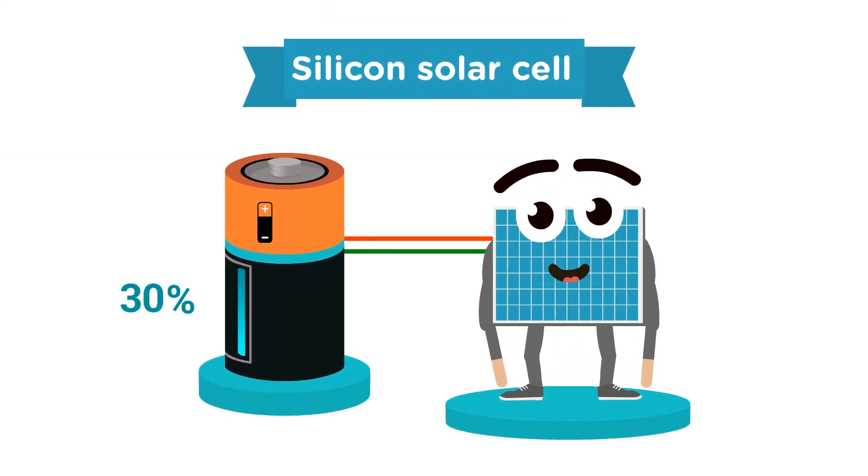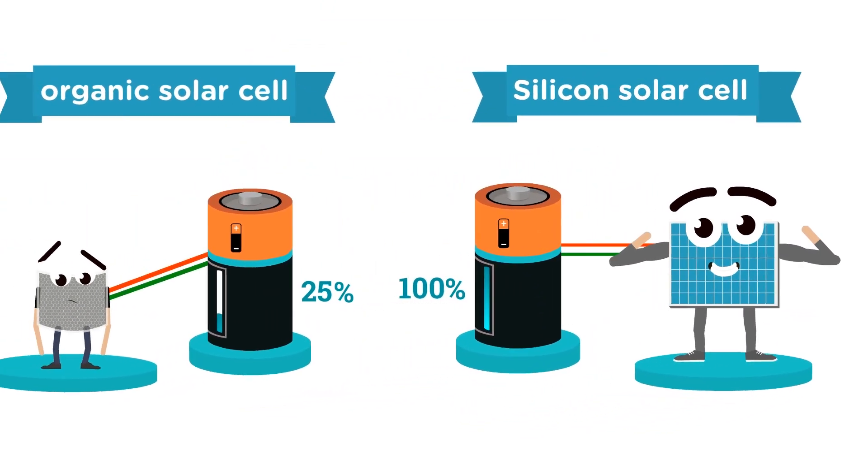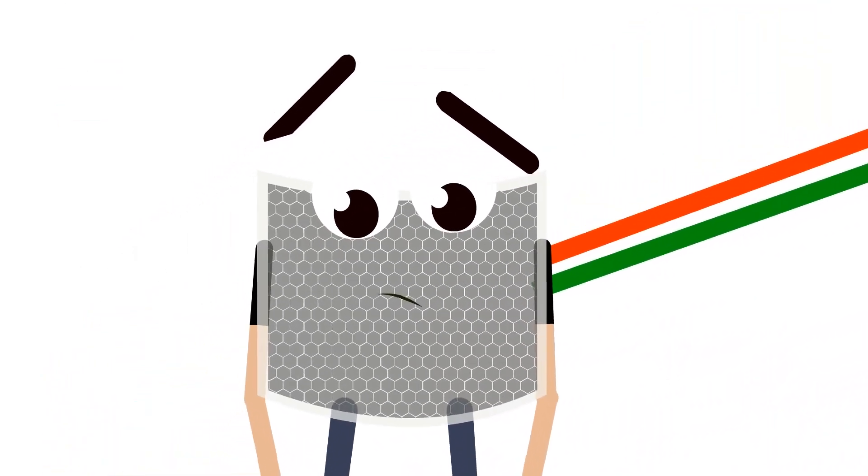Sid is strong and efficient, and he quickly fills his battery. Owen is less efficient, which makes Owen sad.